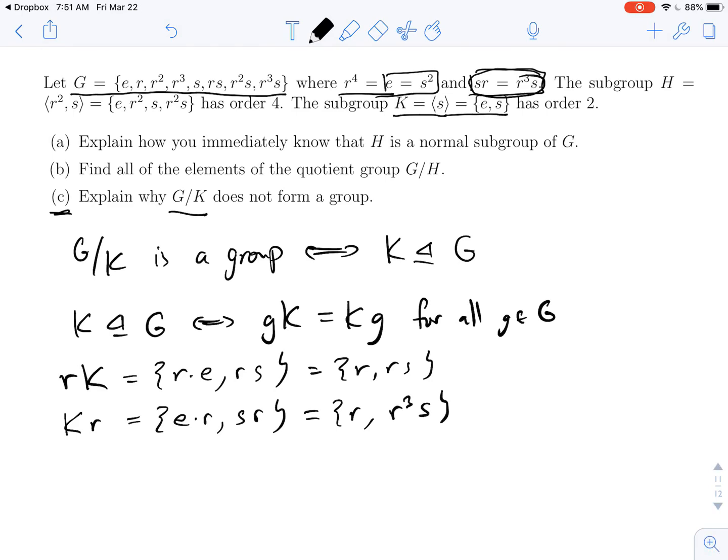So the R's match up, but RS and R cubed S do not match up. So this tells us that RK does not equal KR, which tells us that K is not a normal subgroup of G, which tells us that G mod K is not a group.